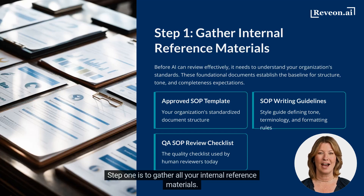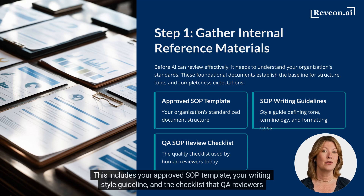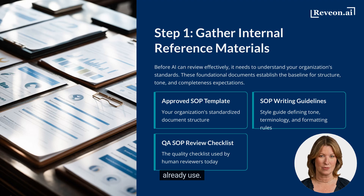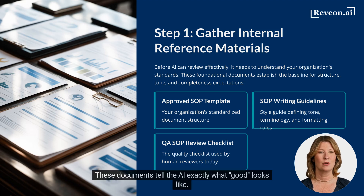Step one is to gather all your internal reference materials. This includes your approved SOP template, your writing style guideline, and the checklist that QA reviewers already use. These documents tell the AI exactly what good looks like.